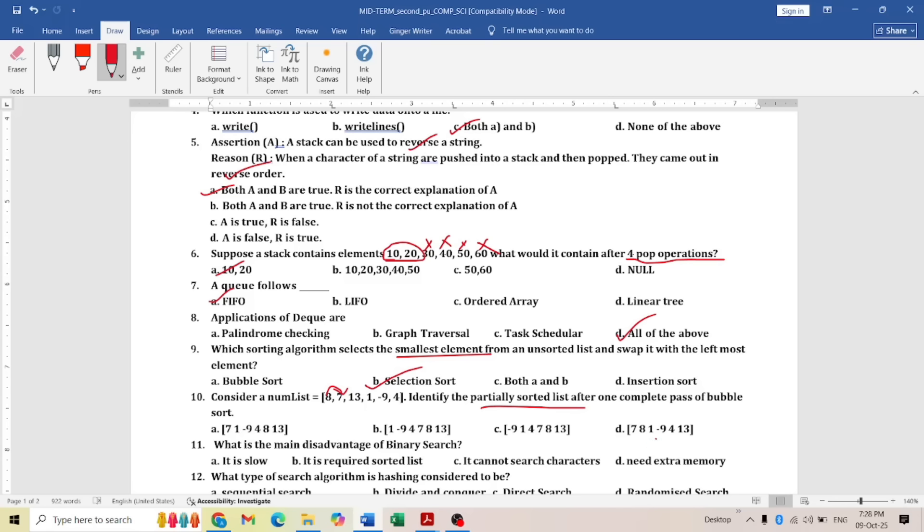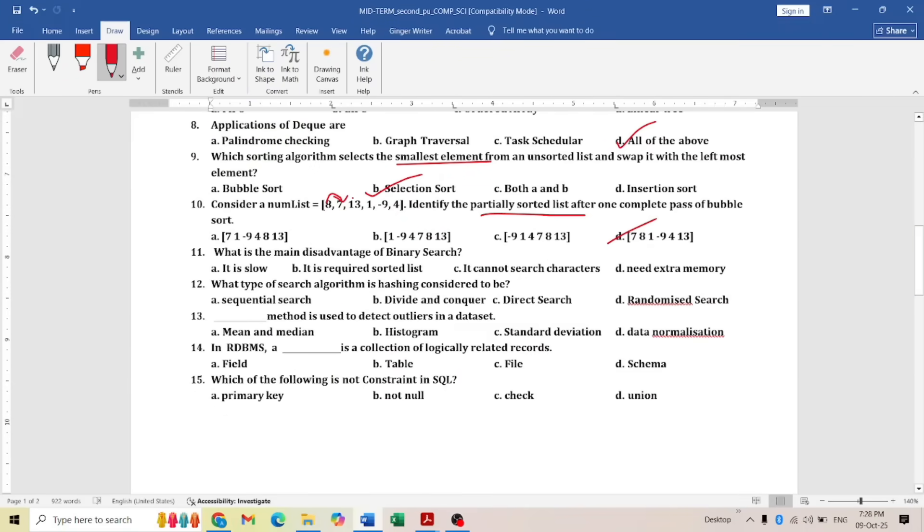After that, you compare 8 and 13. 13 will be larger. So you start comparing 13 and 1. Again, 1 will come before. So 7, 8, 1, then -9, 4, 13 is the answer. If you don't want to do the trick, then do the proper pass one so that you will get the answer.